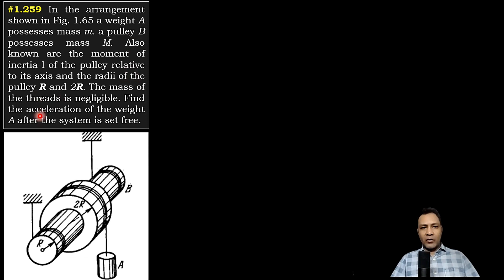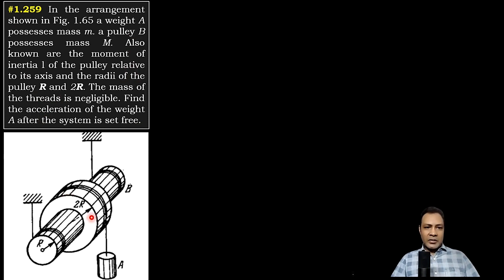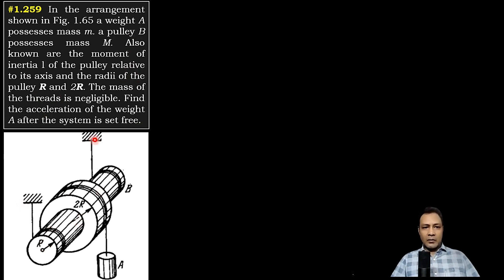Find the acceleration of weight A after the system is set free. As you can see in the diagram, this is a step pulley with two parts — one radius is r and the other radius is 2r. The threads connected from the fixed support are attached to the part of the pulley with radius r, and the suspending mass is connected to the part with radius 2r.